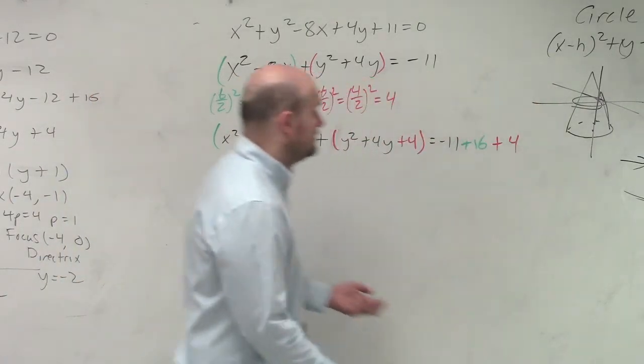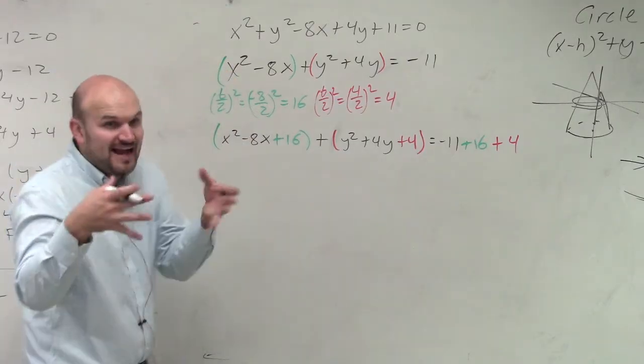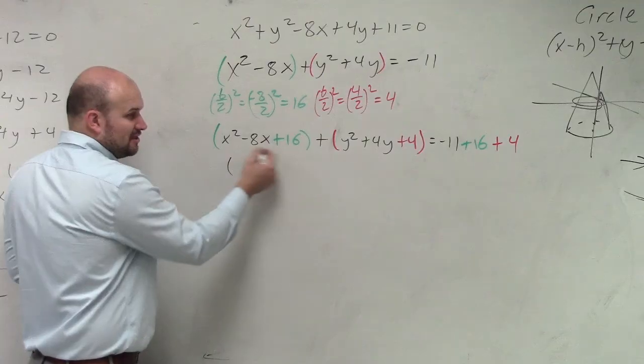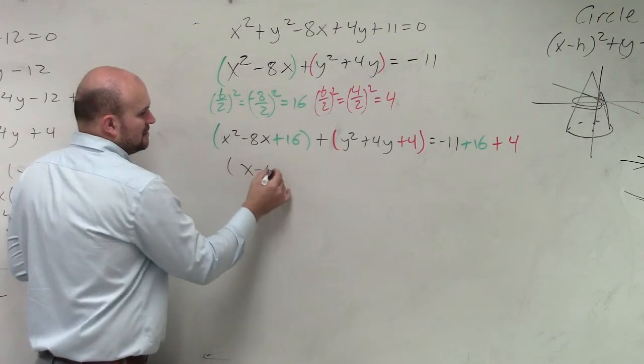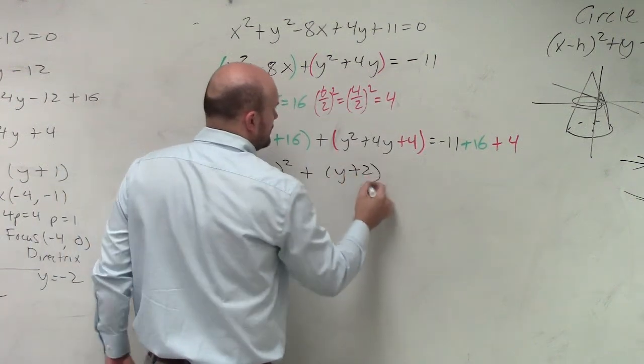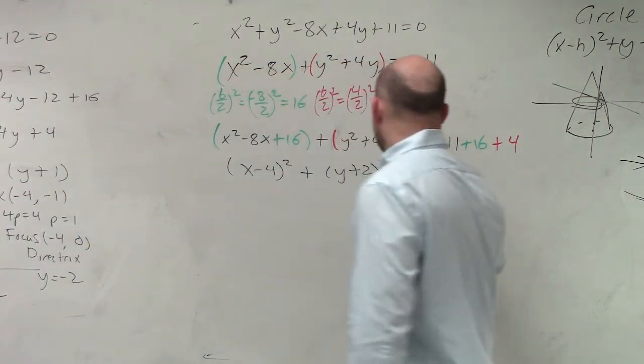Now, we can factor these down to binomial squares, right? So therefore, what two terms multiplied to give you 16 added to give you negative 8? Here, y plus 2. This adds up to 9.